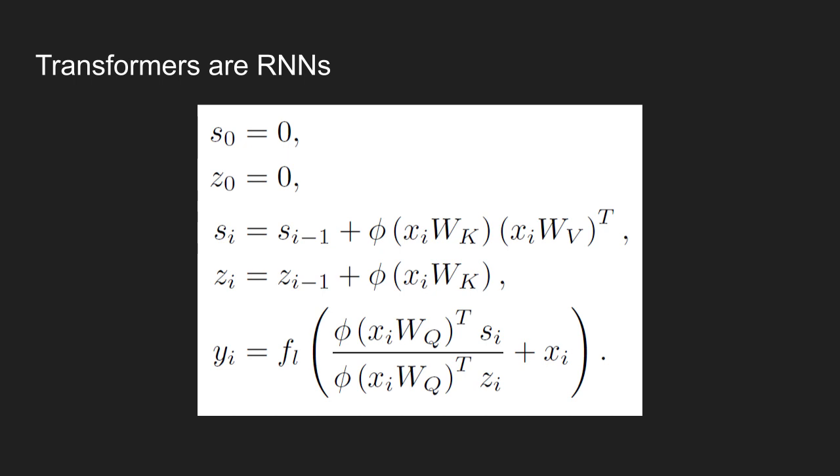The formulation of transformer with causal masking can be expressed as a recurrent neural network. As shown in the figure, the state of transformer RNN is Si and Zi, where Si denotes attention memory and Zi denotes normalizer memory. Given i-th x as an input to the causal attention block, a new Si and Zi state is computed simply by taking the dot product of mapped key and values and summing it to the previous state.